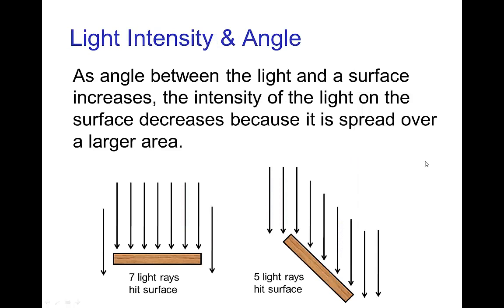And we know already that as a surface is tilted away from a light source, the illumination decreases on the surface, basically because the light is spread over more area.